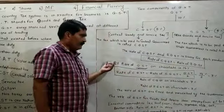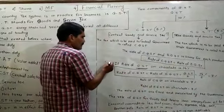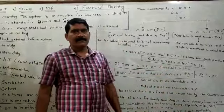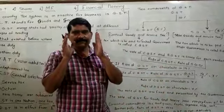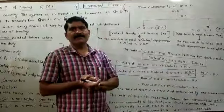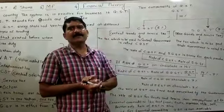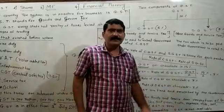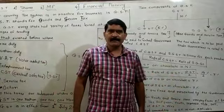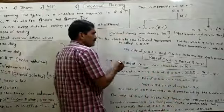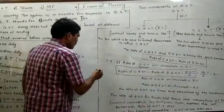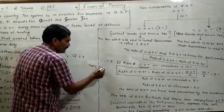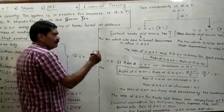Here is an example: if the rate of GST on chocolate is 14%, and you go to the market and purchase chocolates, you have to pay 14% GST. If the chocolate cost is 100 rupees, you have to pay 14% GST on that amount.